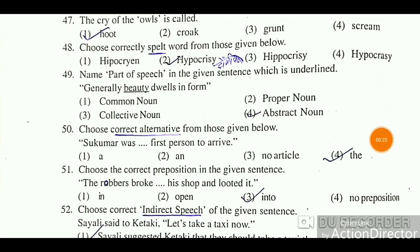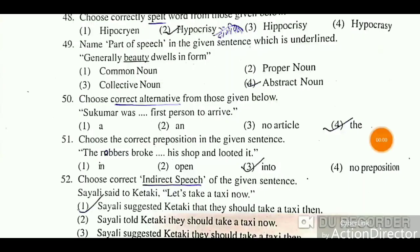Question 50: Choose the correct alternative from those given below. 'Shukmar was dot dot dot first person to arrive.' Options: the, a, an, no article. Before 'first', the article 'the' is used, so option 4 — 'the' — is the correct answer.